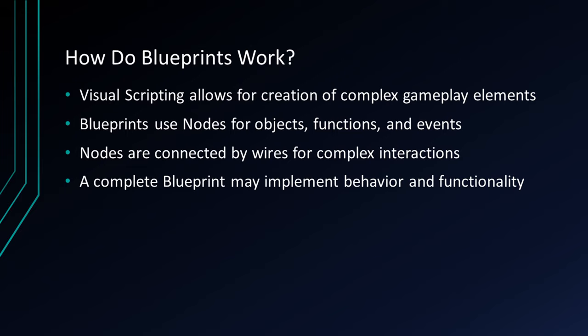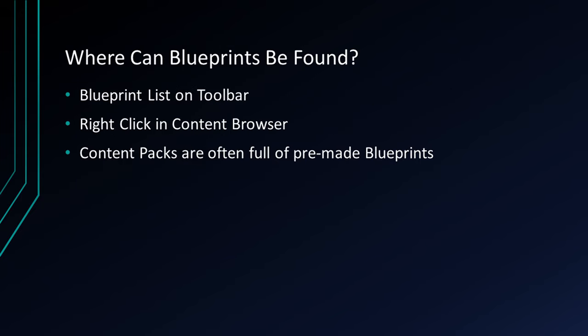How do blueprints work? Visual Scripting allows for creation of complex gameplay elements. Blueprints use nodes for objects, functions, and events. Nodes are connected by wires for complex interactions, and a complete blueprint may implement behavior and functionality. Blueprints can be found on the blueprint list on the toolbar, by right-clicking in the content browser and selecting Blueprints, and content packs are often full of pre-made blueprints.